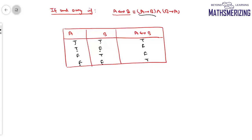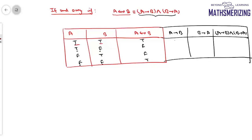We can prove A↔B ≡ (A→B)∧(B→A) using truth tables. A→B has values: true, false, true, true. B→A has values: true, true, false, true. Taking their conjunction: true∧true = true, false∧true = false, true∧false = false, true∧true = true. This matches the truth table for A↔B exactly, confirming that A↔B is logically equivalent to (A→B)∧(B→A).